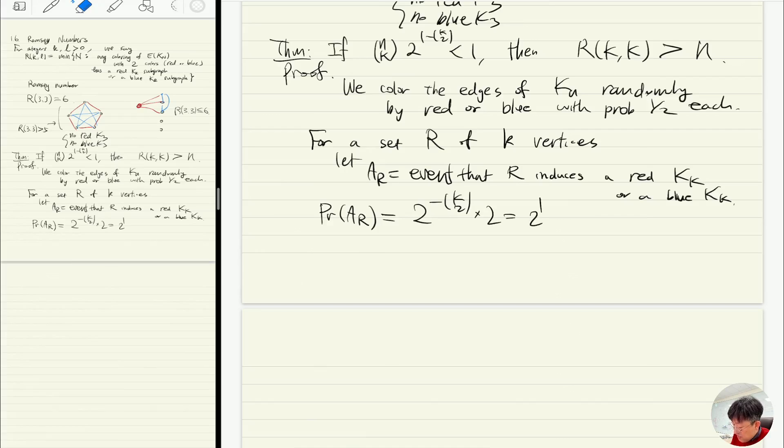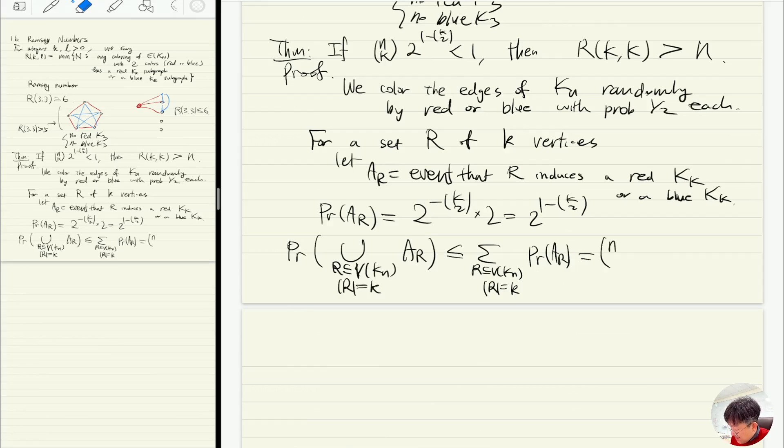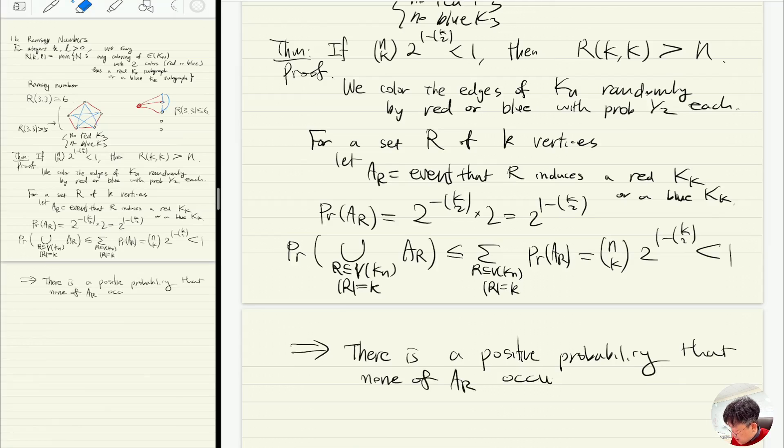What is the probability that AR is happening? Because we color edges randomly, this is 2 to the minus k choose 2, but there are two colors, so it's times 2, so it's 2 to the 1 minus k choose 2. Then the probability of the union for all R of size k is less than or equal to the sum of them, and the number is obviously n choose k times 2 to the 1 minus k choose 2, which is less than 1. This means there is a positive probability that none of AR occurs, so the Ramsey number R(k,k) is bigger than n.